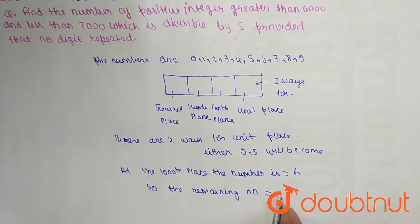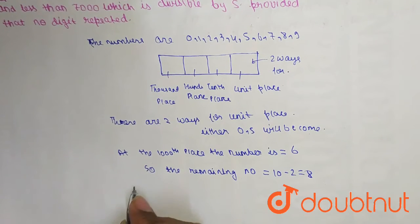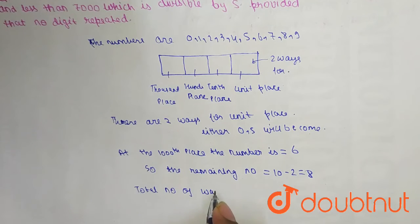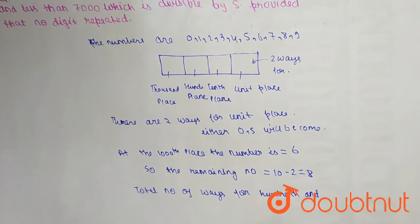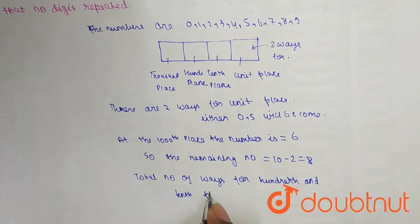The remaining numbers are 10 minus 2 equals 8. Now for hundredth and tenth place, total number of ways for hundredth and tenth place is equal to 8 into 7, which is equal to 56.